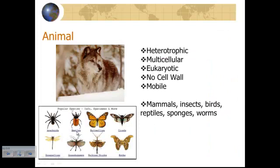In our final kingdom — Animalia — in order for an organism to be an animal, they must be heterotrophic: they do not chemosynthesize or photosynthesize. They are multicellular — they cannot be unicellular. Eukaryotic — they all have nuclei in their cells. No cell walls — that's a key distinction. Animals are mobile, meaning they can move. This includes mammals, insects, birds, reptiles, and even sponges. Sponges and corals are mobile during at least part of their lifetime — during their reproductive phase when immature — then become sessile later.